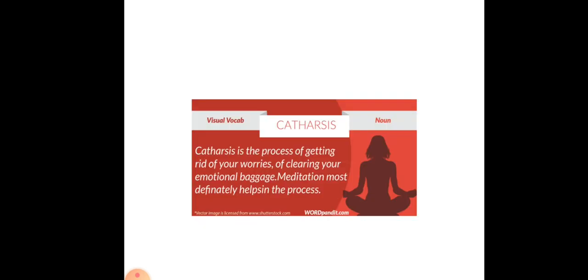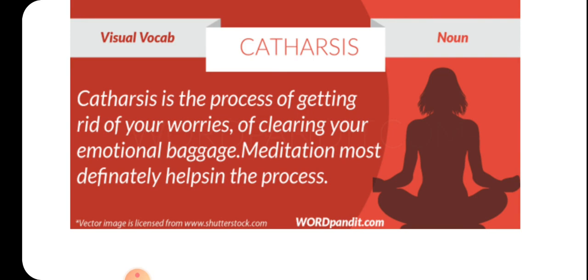The next word is 'catharsis.' Catharsis is a process of releasing strong feelings — for example, through plays or other artistic activities. It's one of the dramatic techniques suggested by Aristotle in Poetics. It's a Greek word originated from 'katharos,' which means pure. Catharsis is a process where you try to clean or purify yourself by getting rid of your worries through artistic activities, plays, or meditation.